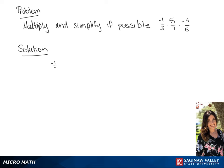We have negative 1 over 3 times 5 over 7 times negative 4 over 5. 5 goes into 5 one time, so we can cross those off and replace them both with a 1.